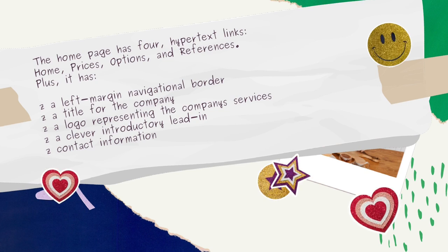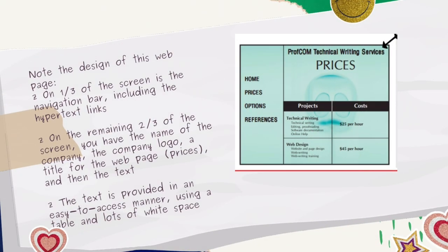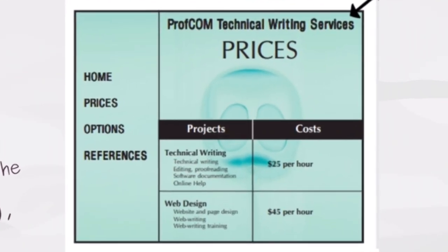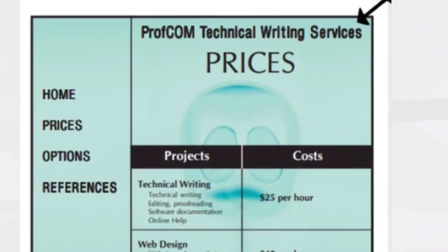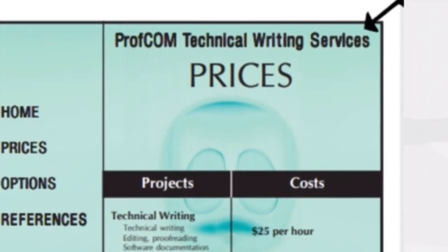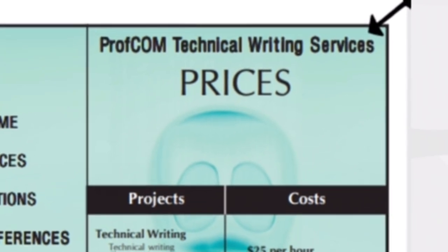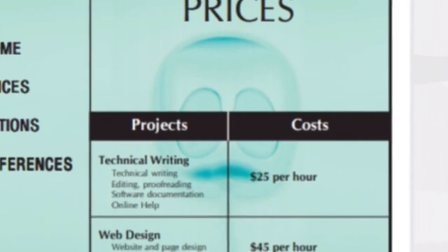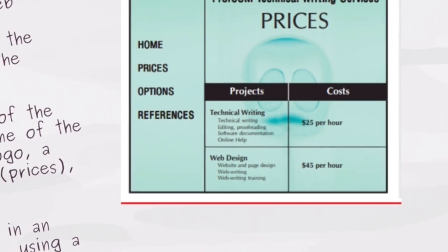The home page has four hypertext links — Home, Prices, Options, and References — plus a left-margin navigational border, a title for the company, a logo representing the company's services, a clever introductory lead, and contact information. This example design shows one-third of the screen as the navigation bar with hyperlink text, and the remaining two-thirds features the company name, logo, a title for the web page, and text provided in an easy-to-access manner using a table and lots of white space.